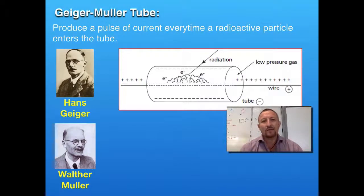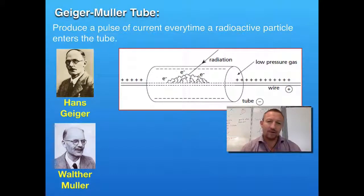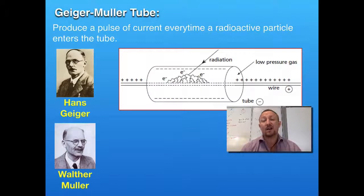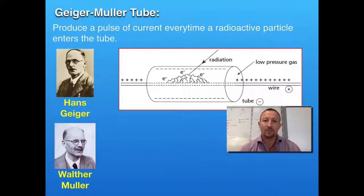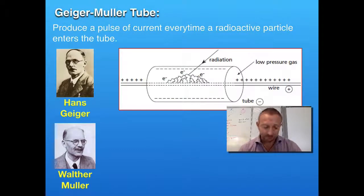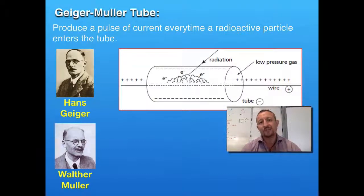From there, we moved on to the Geiger-Müller tube. Most people understand it as a tube linked to a box that clicks — the more it clicks, the more radioactive the sample is. What actually happens is it again uses the ionizing ability of the radioactive particle. You can calibrate the Geiger-Müller tube to detect specific types of radioactive samples. The more ionization that happens within the tube, the more electrical current flows, and it counts the number of charges generated.